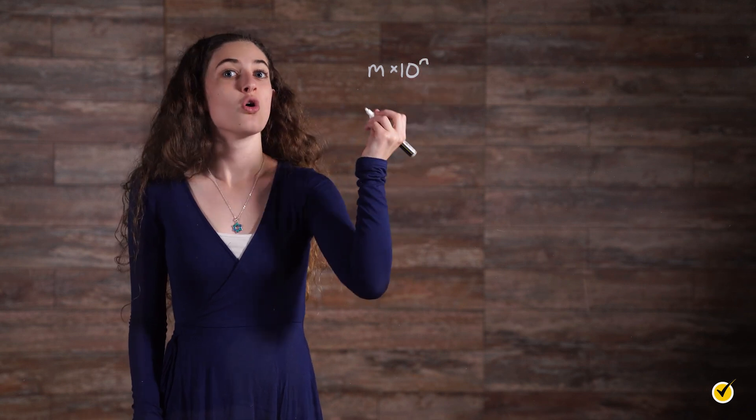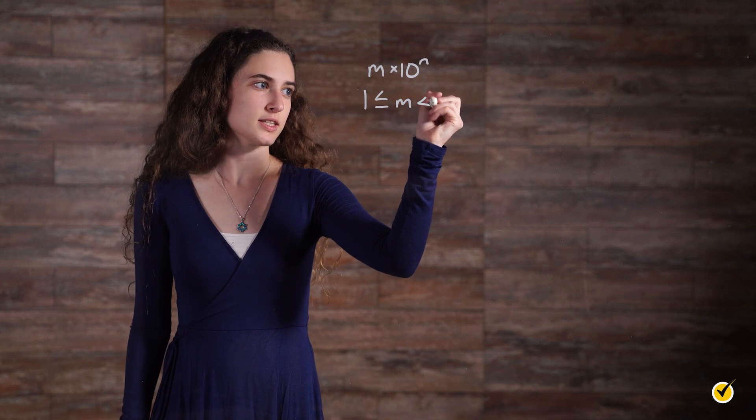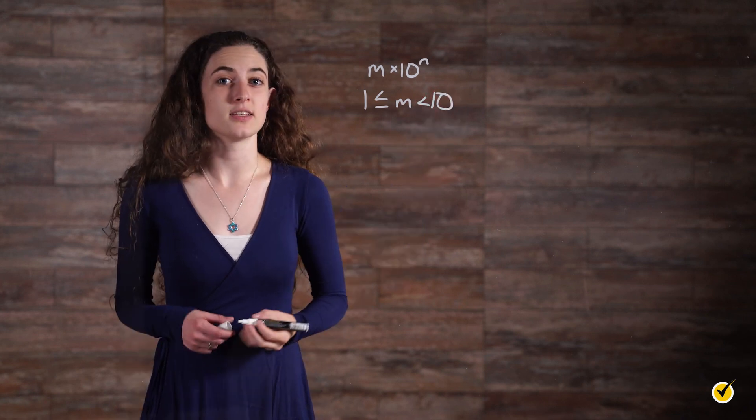Every real number can be written as a product of two parts, a decimal part times an integer power of 10. m times 10 to the n, where 1 is less than or equal to m, which is less than 10, and n is an integer.